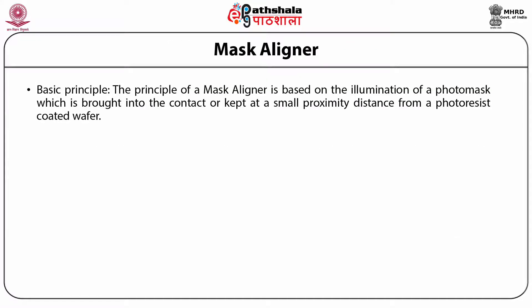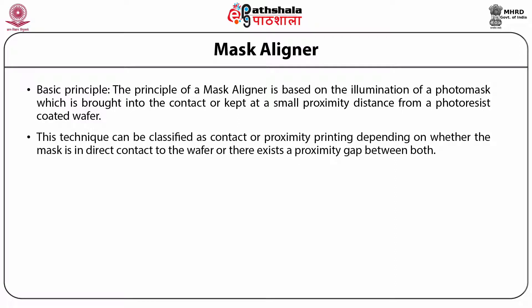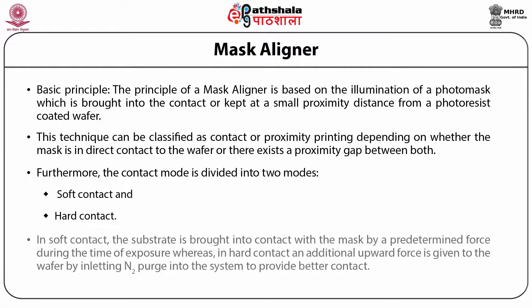The principle of the mask aligner is based on the illumination of a photomask which is brought into contact or kept at a small proximity distance from a photoresist-coated wafer. This technique can be classified as contact or proximity printing depending on whether the mask is in direct contact with the wafer or there exists a proximity gap between both. The contact mode is divided into two modes: soft contact and hard contact. In soft contact, the substrate is brought into contact with the mask by a predetermined force during exposure, whereas in hard contact an additional upward force is given to the wafer by introducing a nitrogen purge into the system to provide better contact.